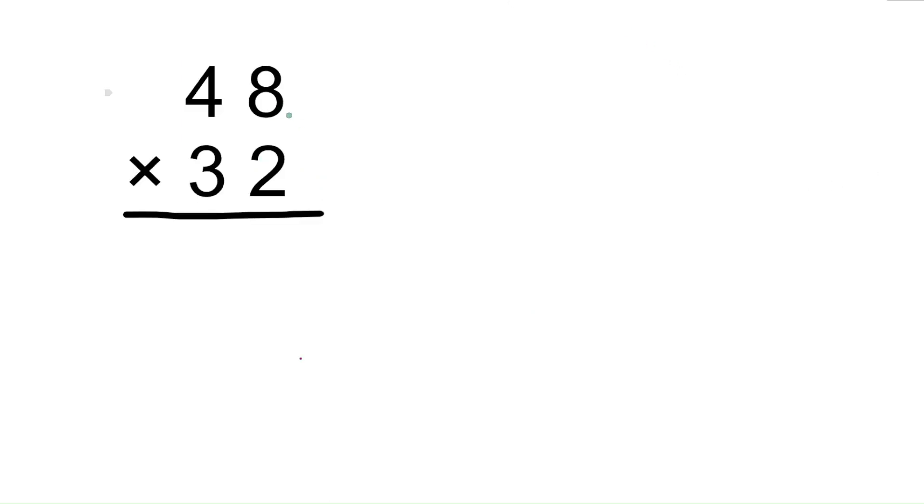We can call this method 'two verticals and one cross.' Two verticals means the ones place and tens place on these sides. Vertical means you need to do the multiplication.